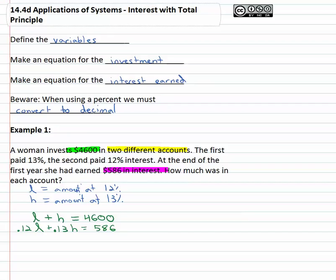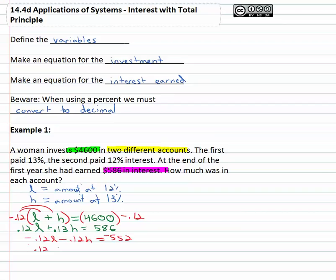We're completely set up to solve by elimination. We want to get opposites in front of one of the variables — let's pick L. We multiply the first equation by negative point twelve on both sides, giving us negative point twelve L minus point twelve H equals negative five fifty-two. Adding the second equation, point twelve L plus point thirteen H equals five eighty-six, the L's cancel and we get point oh one H equals thirty-four.